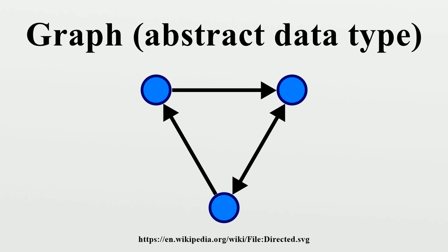A graph data structure consists of a finite set of vertices or nodes or points, together with a set of unordered pairs of these vertices for an undirected graph or a set of ordered pairs for a directed graph. These pairs are known as edges, arcs, or lines for an undirected graph and as arrows, directed edges, directed arcs, or directed lines for a directed graph.